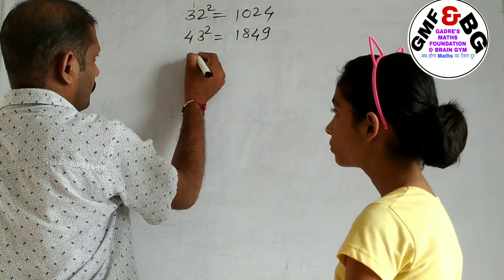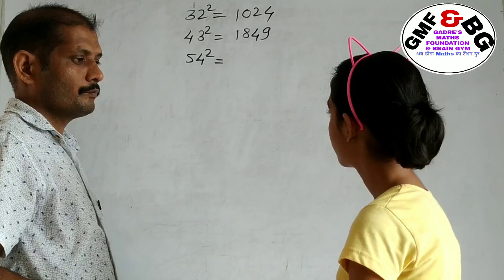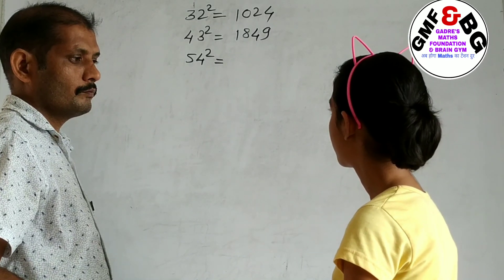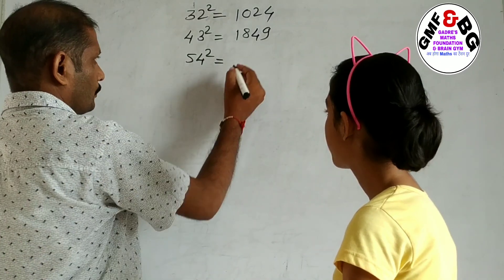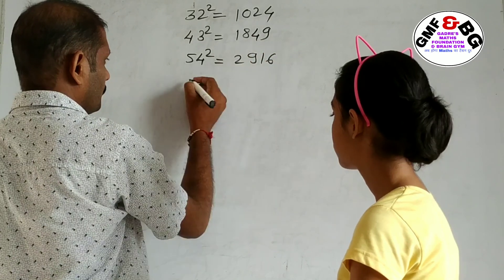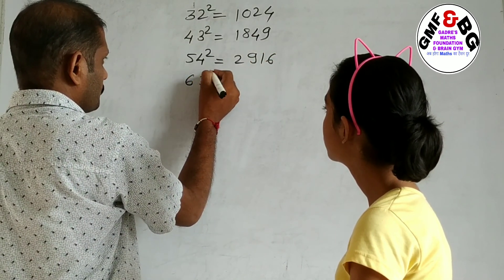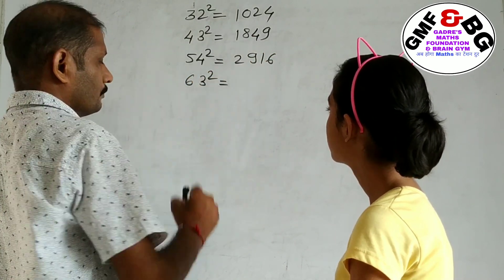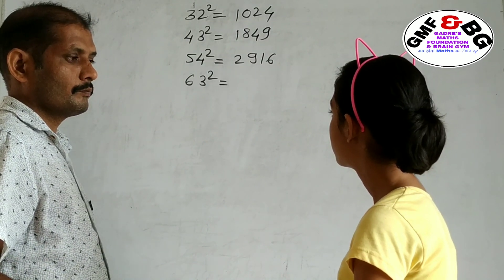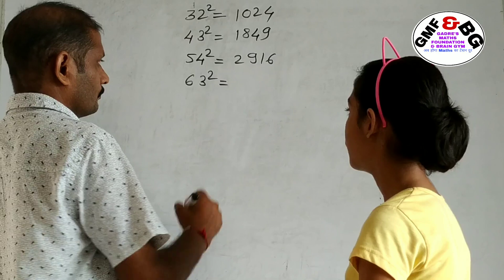Next: 54 squared equals 2916. Next: 63 squared equals 3969.